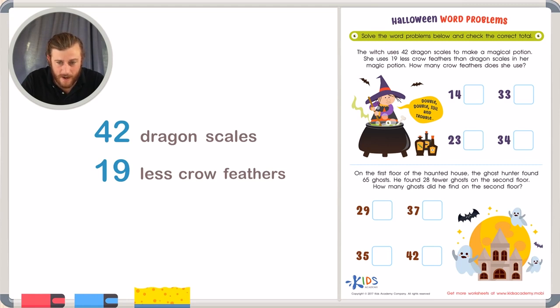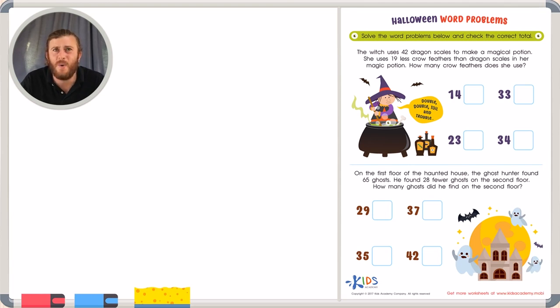And she also uses 19 less feathers. The question wants to know how many feathers does she use? It has that tricky word in it, less than. How can we figure out how many crow feathers she really has? Well, when you see the word less than, that usually signals subtraction.